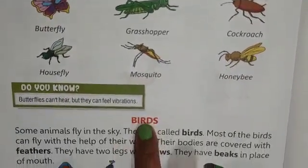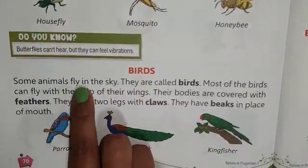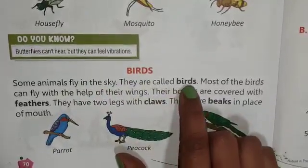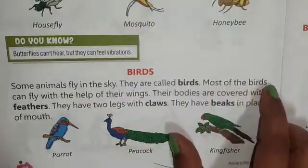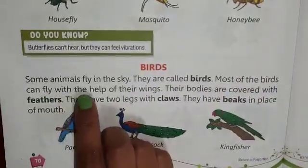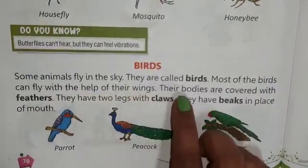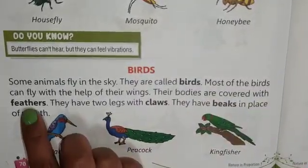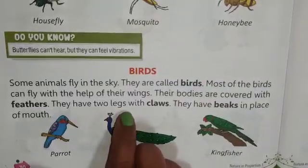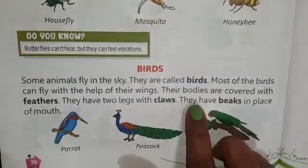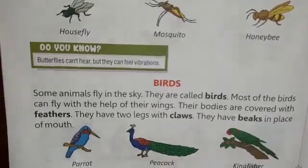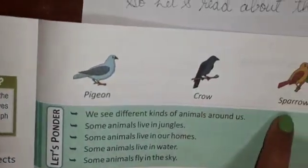Birds. Some animals fly in the sky. They are called birds. Most birds can fly with the help of their wings. Their bodies are covered with feathers. They have two legs with claws and wings in place of arms. Examples include parrot, peacock, kingfisher, pigeon, crow, and sparrow.